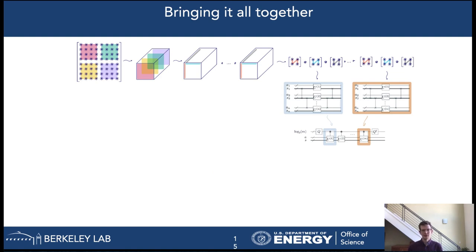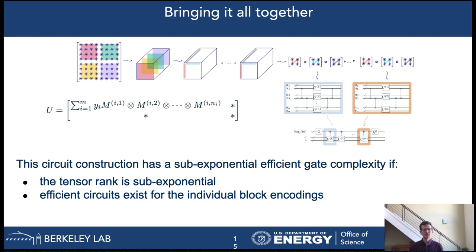It is clear that combining all the previous steps in the correct order, namely starting from the unitary, tensorize it, decompose the tensor, matrixize it, and then circuitize it, we arrive at a method that constructs a circuit which block encodes a matrix with a tensor rank structure as shown on the slide. This circuit construction is efficient under some mild assumptions. Specifically, the tensor rank shouldn't grow too large and the individual block encodings should be small enough or have a bounded gate complexity.